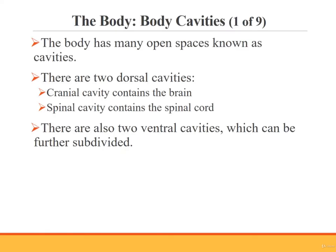Yet another way of dividing and describing the body is by using body cavities. The body is not a solid structure — it has many open spaces, referred to as cavities. There are two dorsal cavities: the cranial cavity, which contains the brain, and the spinal cavity, which contains the spinal cord. There are also two ventral cavities which can be further subdivided.